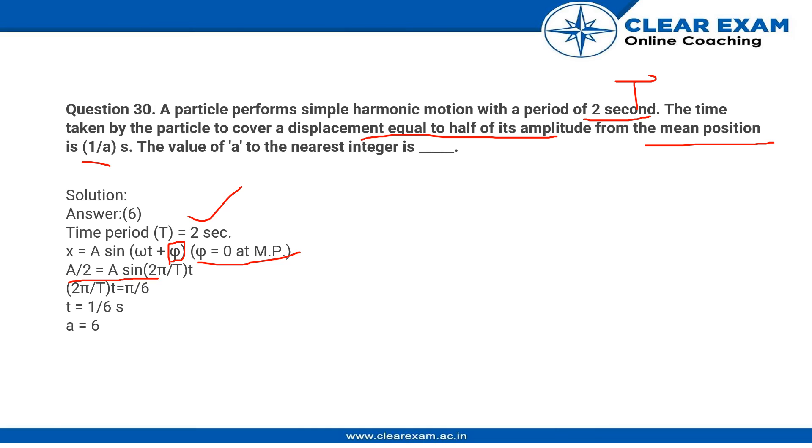We have 1 by 2 equal to sin of 2π by T into the time. And sine is half when the angle is π by 6, which is 30 degrees.